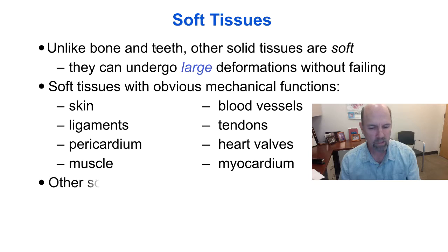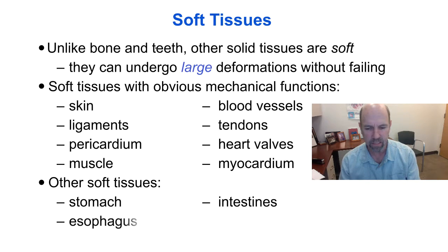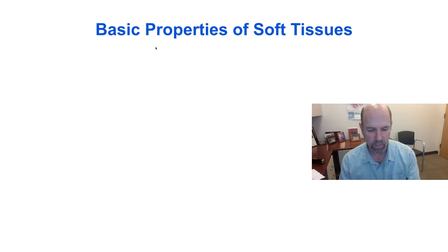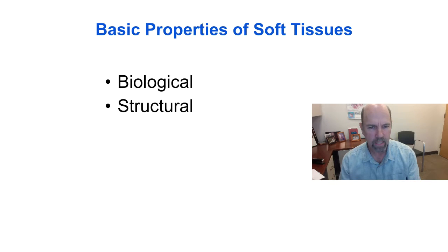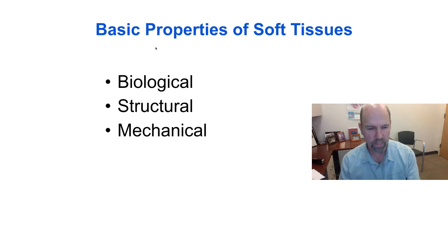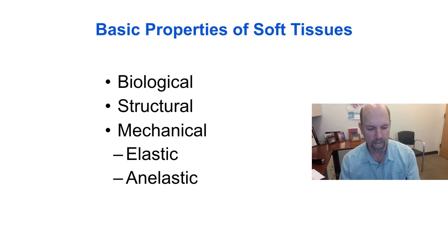Other soft tissues include stomach and intestines, esophagus, kidney, liver and brain. We will consider the properties of soft tissues in the following categories: their biological properties, their structural properties, and their mechanical properties, which we will further classify as either elastic or anelastic.